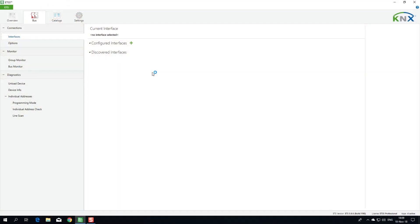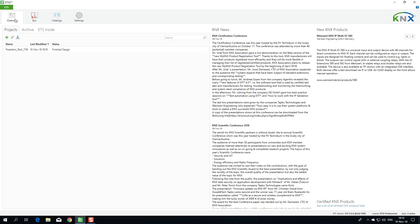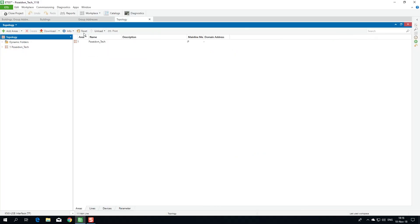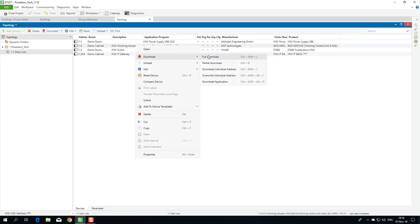On the bus page of the ETS 5, the KNX USB Interface is discovered automatically. So, choose it and select it. Open an ETS project. Select full download.